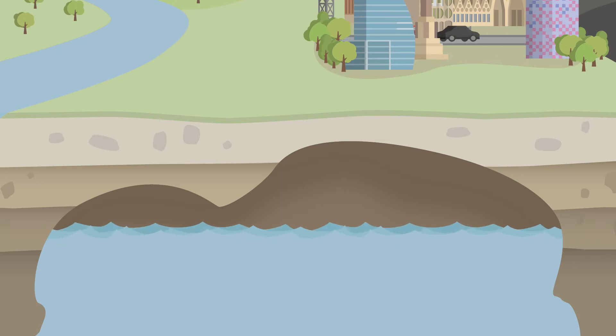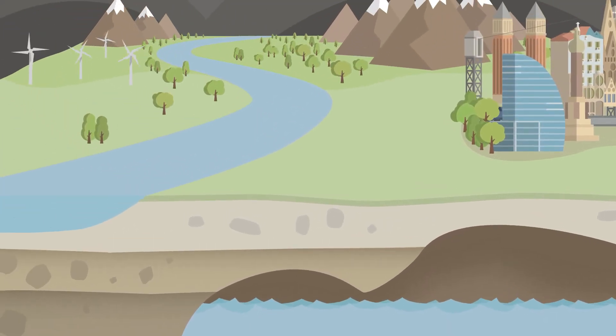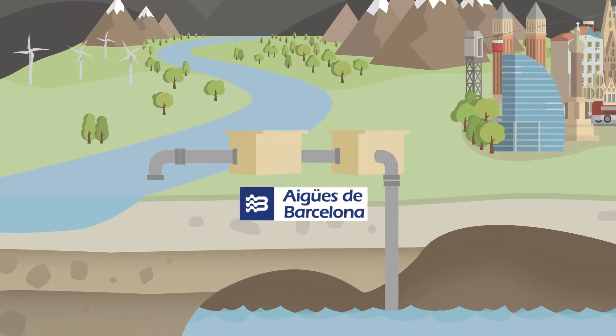Good management of aquifer resources is crucial to deal with water scarcity. Since 1969, Aguas de Barcelona has a sustainable recharge system for aquifers, where water is directly injected into or extracted from the Llobregat aquifer.